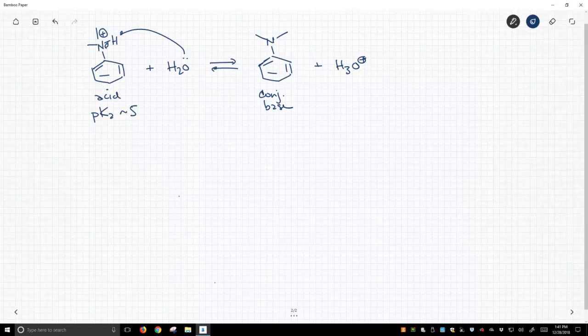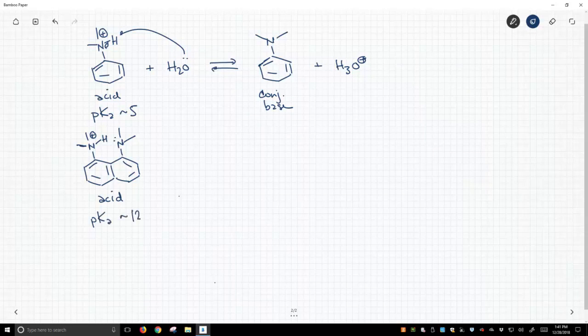Okay, let's draw a fairly similar structure that has a very different pKa. And this molecule looks like this. This is the acid form, the protonated form of the molecule, and it has a pKa of about 12.